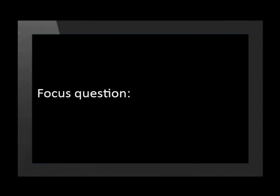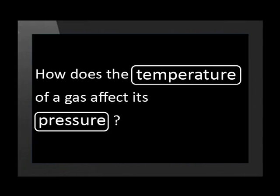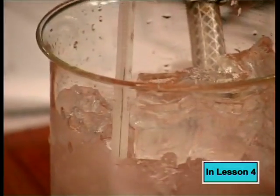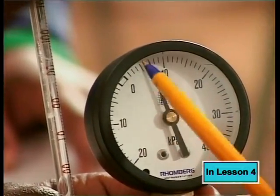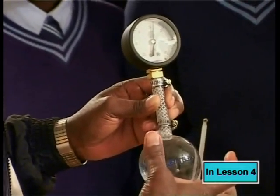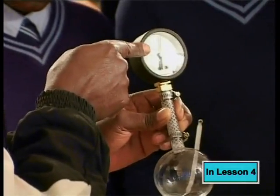Let's remind ourselves what these were. First, let's remind ourselves of the focus question they tried to answer: how does the temperature of a gas affect its pressure? So they changed the temperature of a trapped gas, they recorded each temperature, and they measured the pressure of the gas for each temperature. They kept the volume and amount of gas constant by the use of an enclosed jolly bulb.